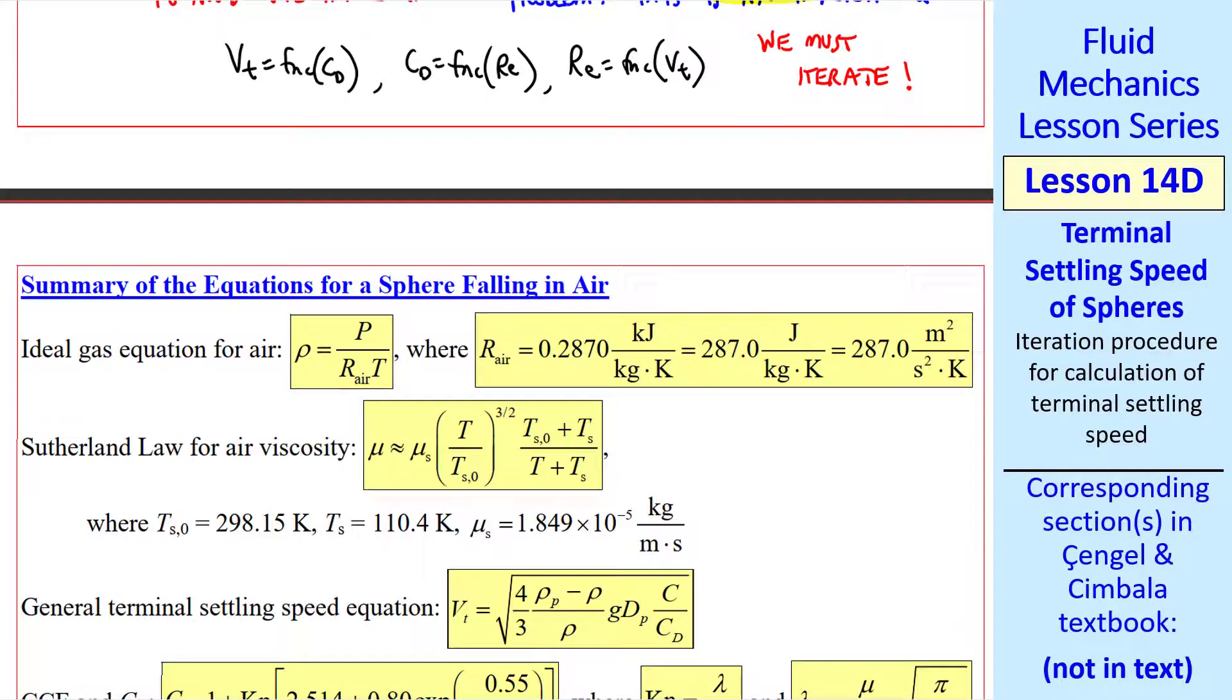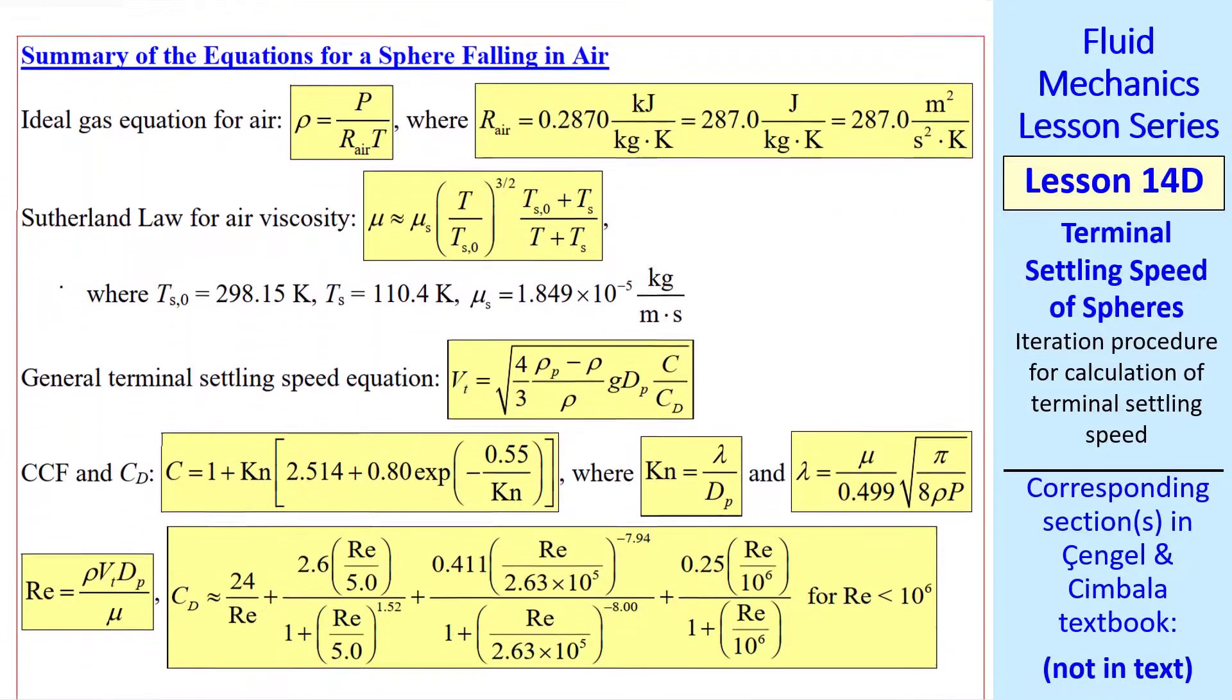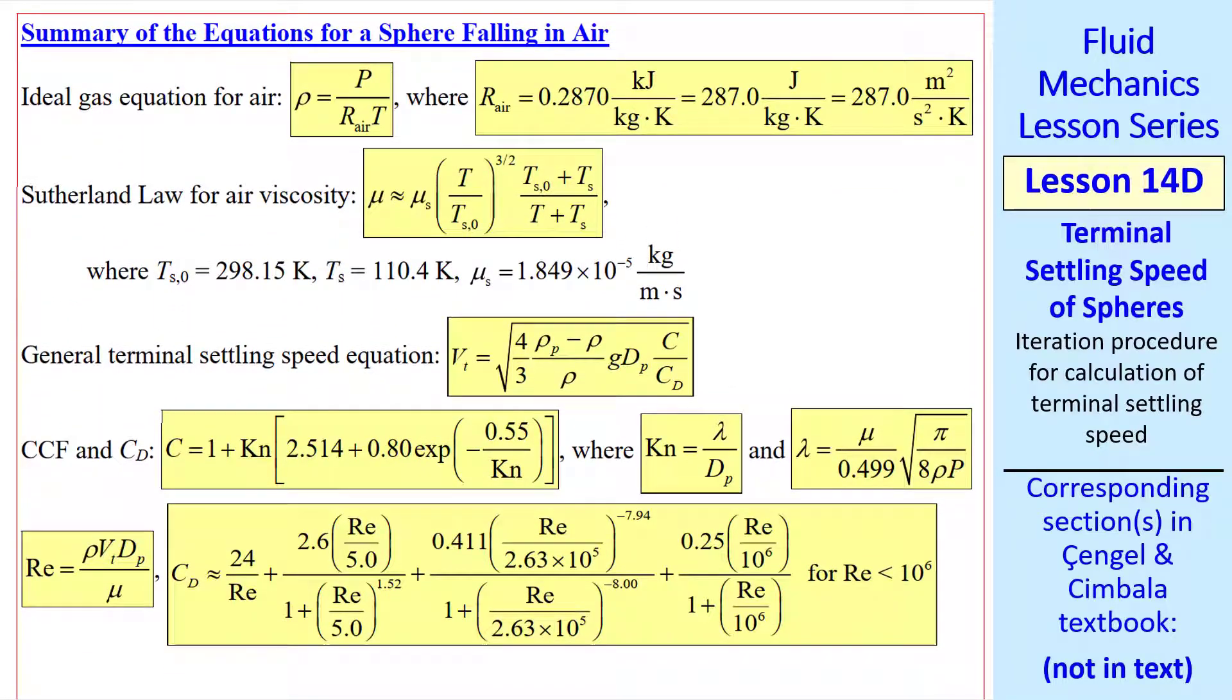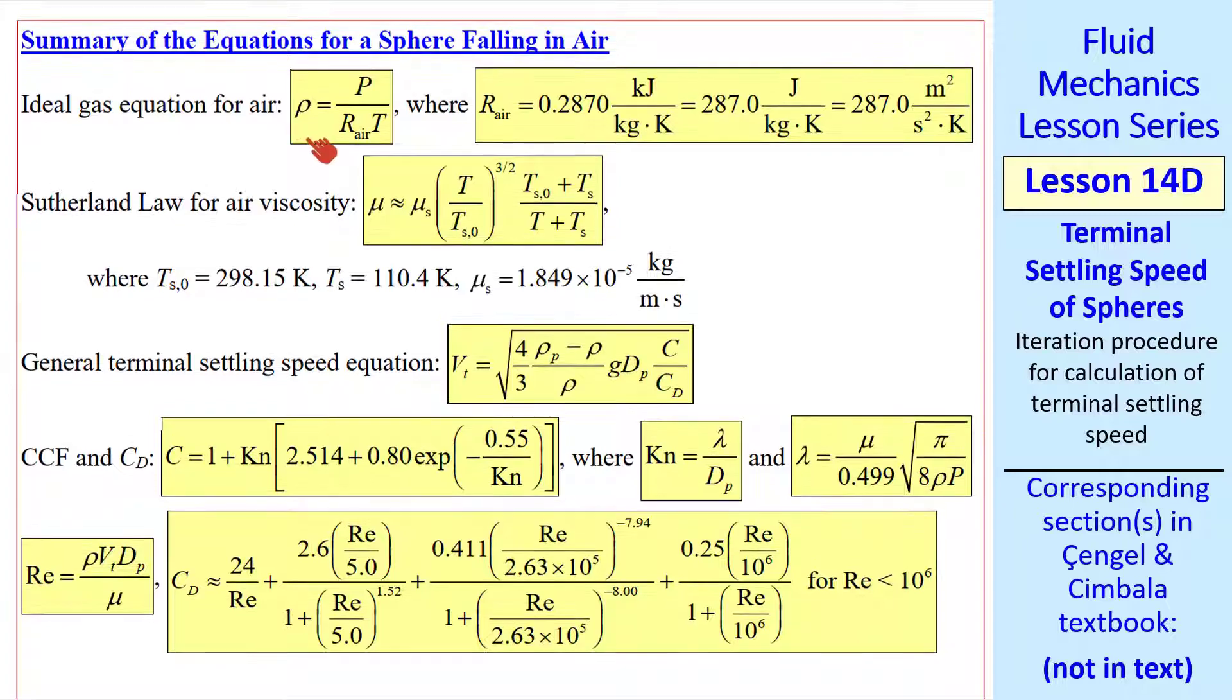Before I show the procedure for iterating, here's a summary of all the equations for a sphere falling in air. The ideal gas law, where this is r for air in various units. The Sutherland law for air viscosity, which is shown here with these constants. Always use this equation for mu for air. Again, I advise you to put this into software, and once you type in this equation, you can copy and paste it anywhere else without having to type it in again, once you're sure that it's working.